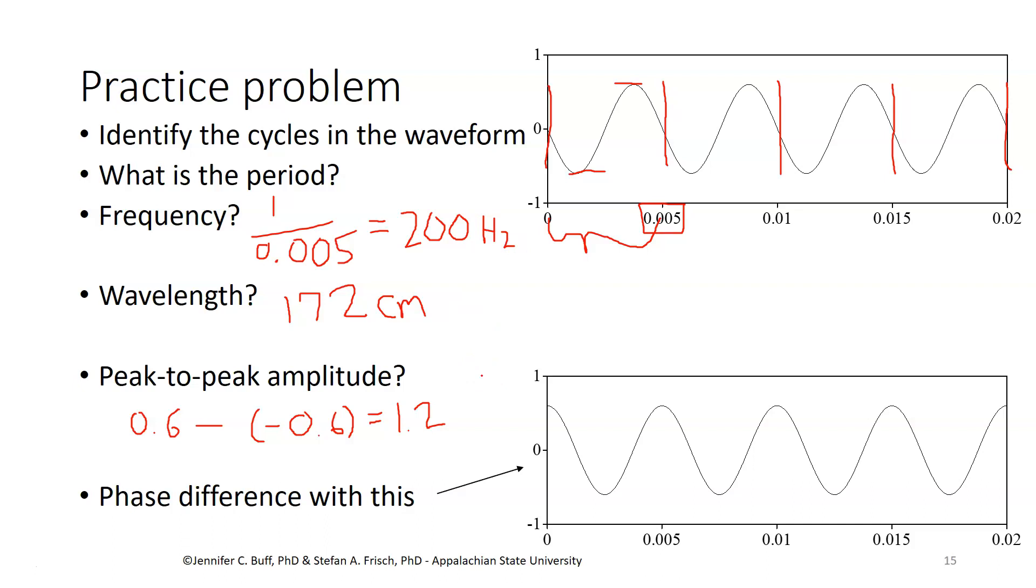And then last but not least, a phase difference. We have a different sound that starts out at its compression peak. For our original sound, we start out at a 0 point, head down to rarefaction, that's 90 degrees, back up to 0 to atmospheric pressure, and then finally up to the same point as on the sound down below. So 90, 180, 270, so the phase difference is 270 degrees.